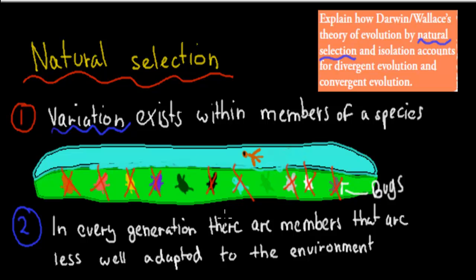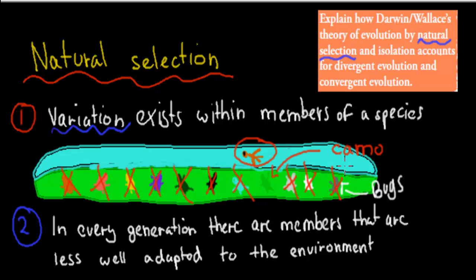Now only two are left: the dark green and the really light green one, which you can barely see. The hawk still has good eyesight and can get the dark green one. So in every generation, those members less well adapted to the environment — here, the ones not well camouflaged — are killed off, while the well-camouflaged one is best adapted.